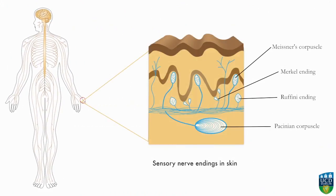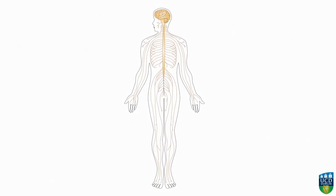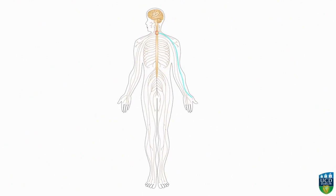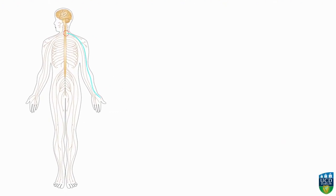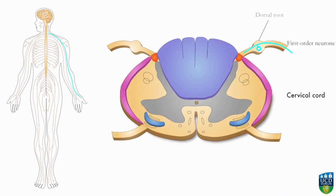Tactile sensation is mediated by several specialized types of nerve endings in the skin. In this case, the impulse travels via the first order neuron from the thumb through nerves in the arm to reach the spinal cord via the brachial plexus. The impulse is carried by the first order neuron into the spinal cord via the dorsal root, where it then enters fasciculus cuneatus.